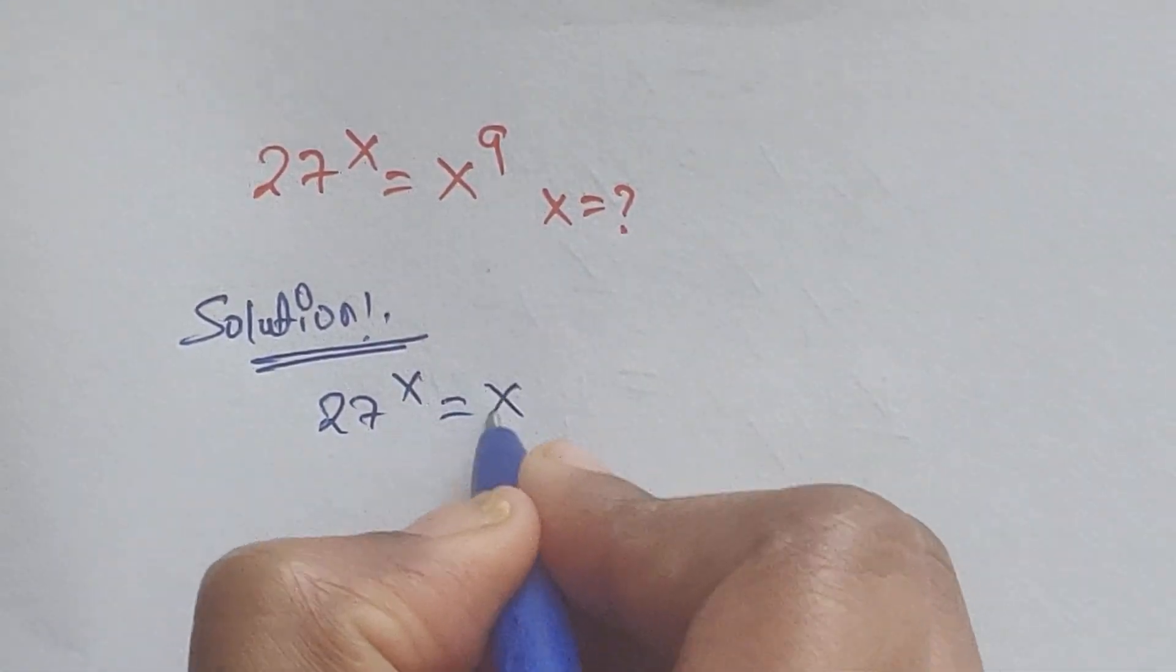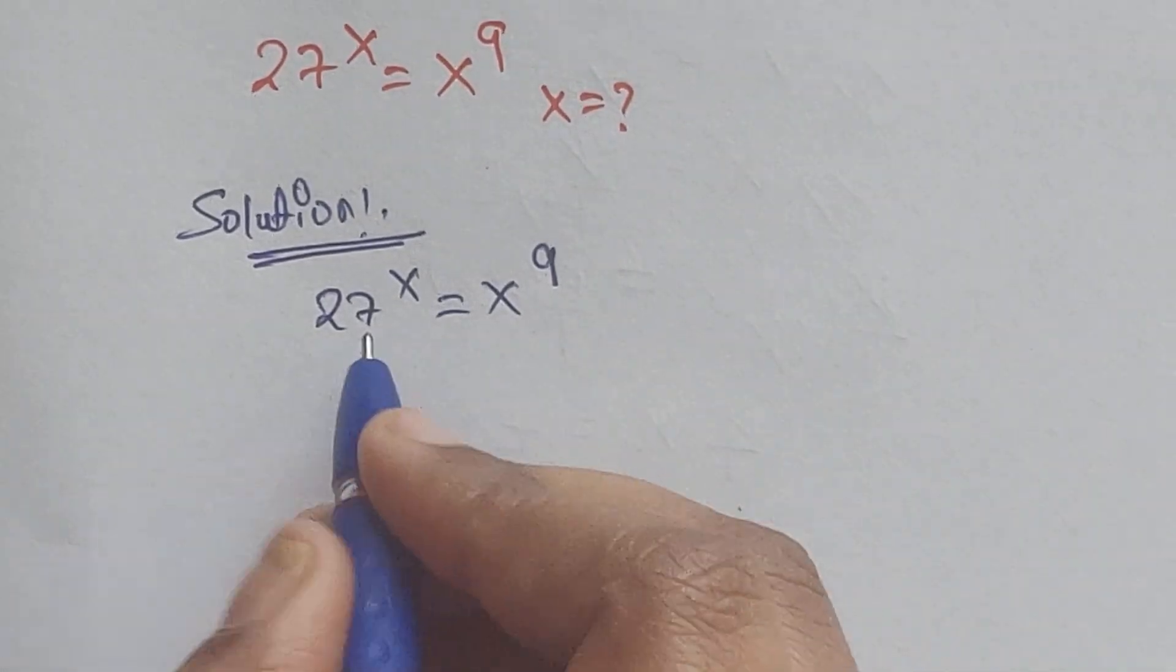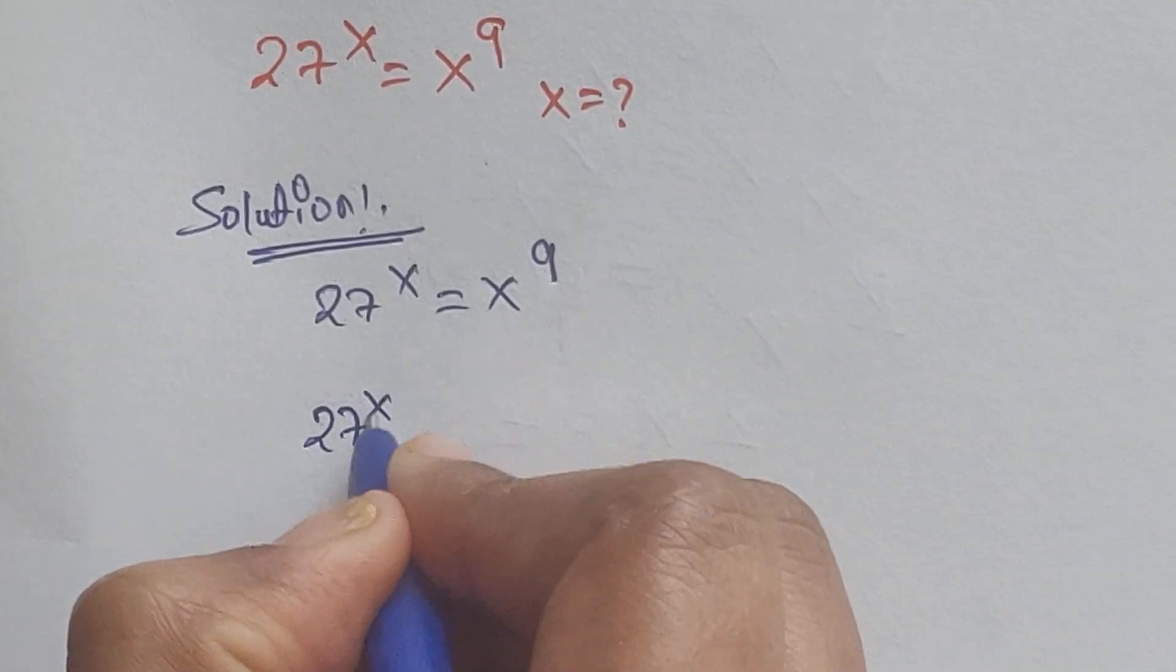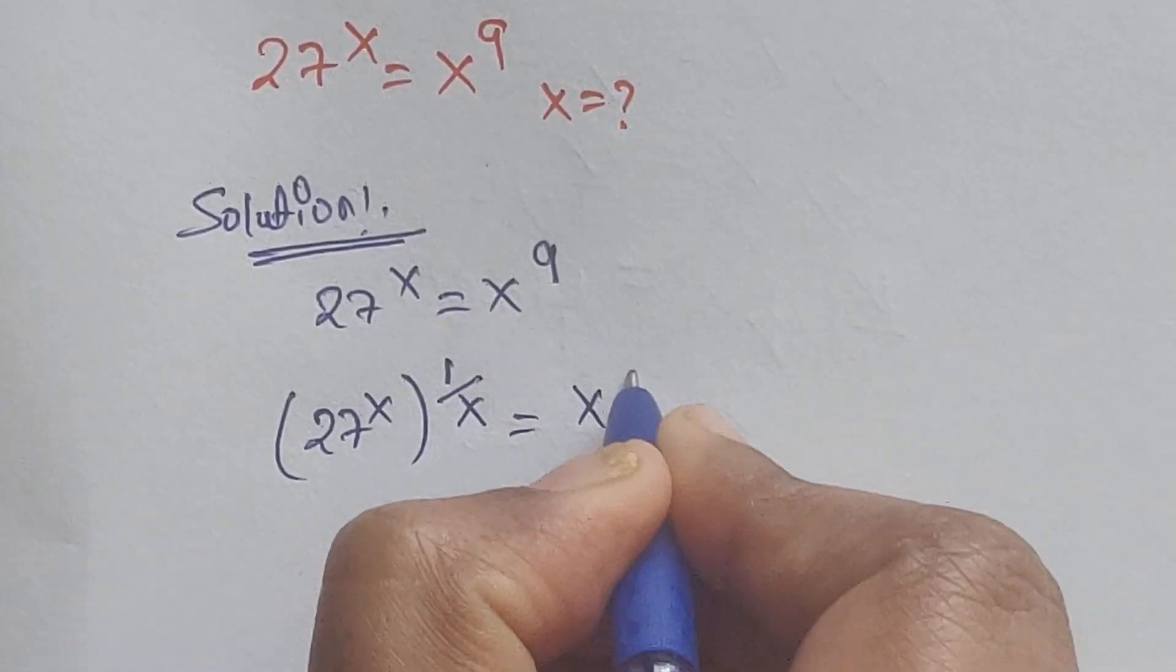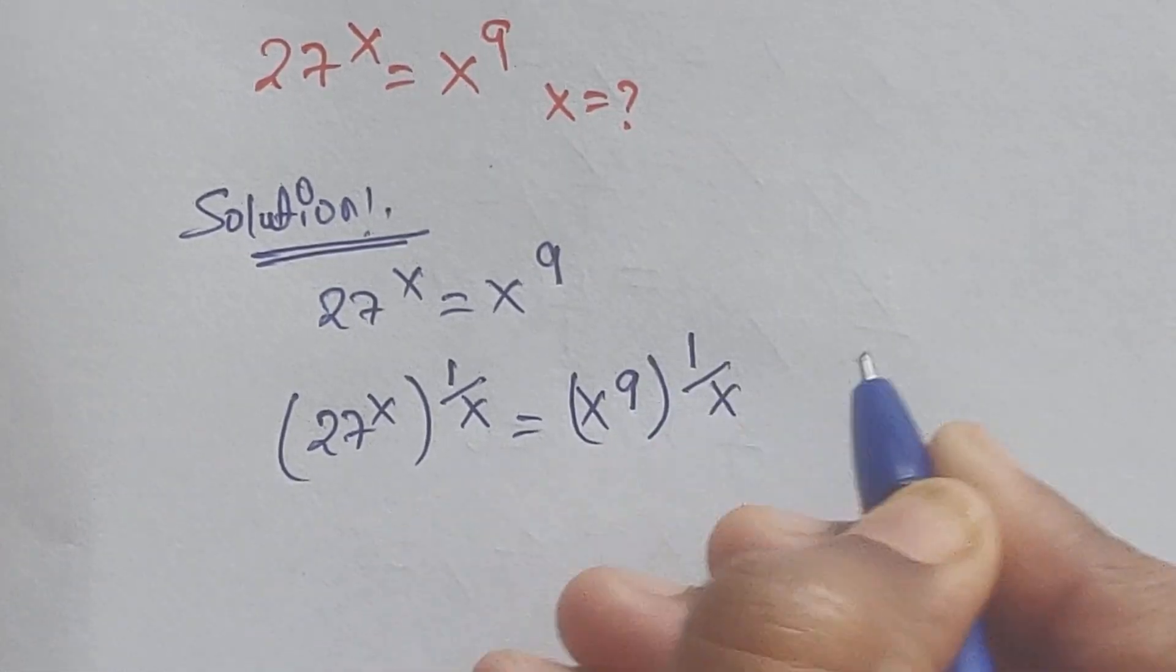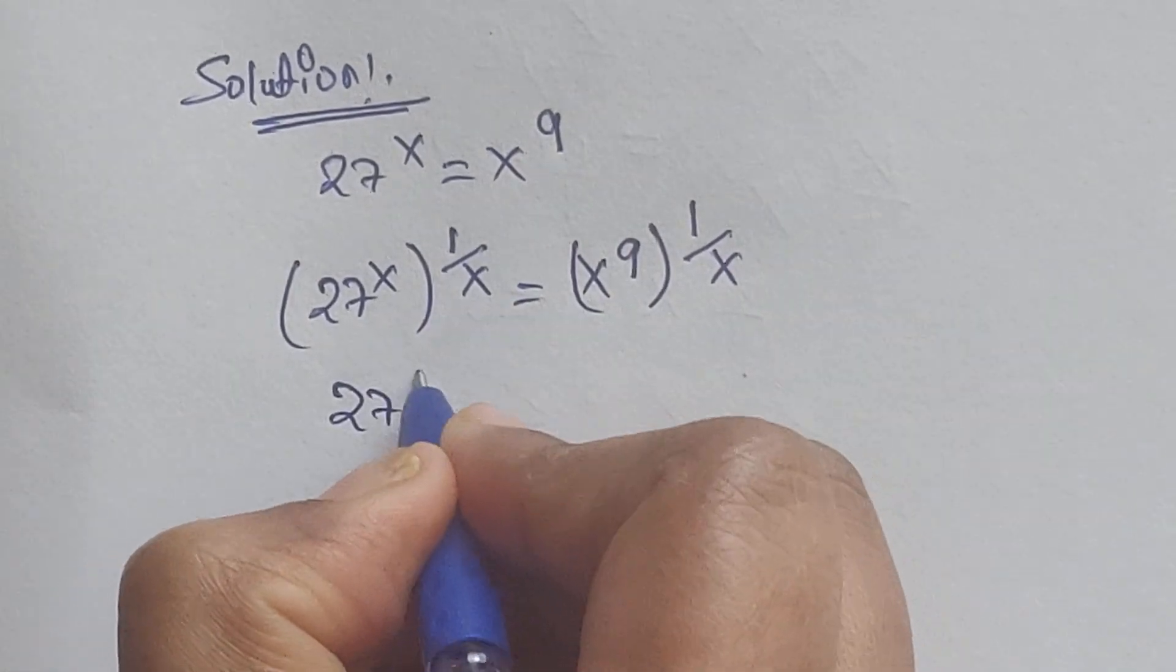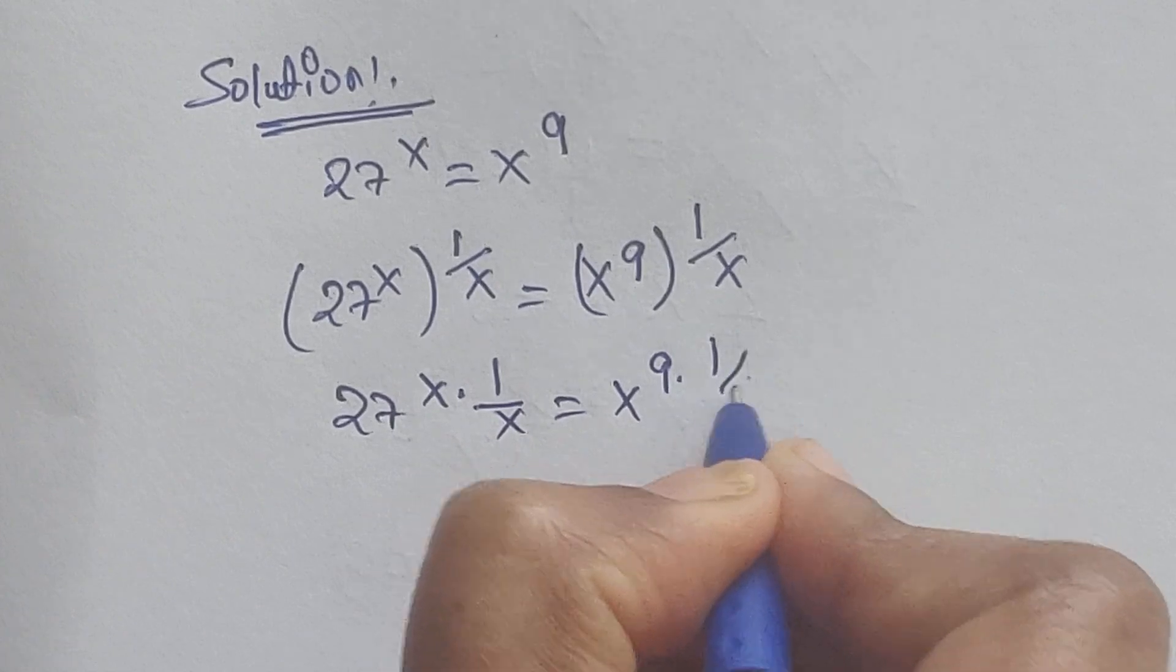27 to the power of x equals x to the power of 9. So first, multiply by 1 by x on both sides as a power. 27 to the power of x to the power of 1 by x equals x to the power of 9 to the power of 1 by x. So now 27 to the power of x times 1 by x equals x to the power of 9 times 1 by x.